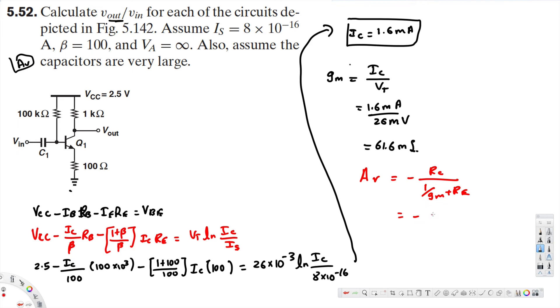R_C is the collector resistance, that's 1 kilohm, or 1 times 10 to the power of 3, divided by 1 over g_m, that's the transconductance, 61.6 times 10 to the minus 3, plus the emitter resistance, that's 100 ohms. If you calculate A_V, you will get minus 8.6, and that's the voltage gain.